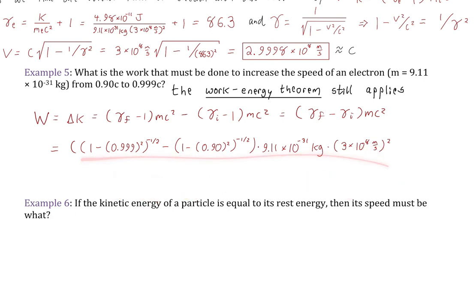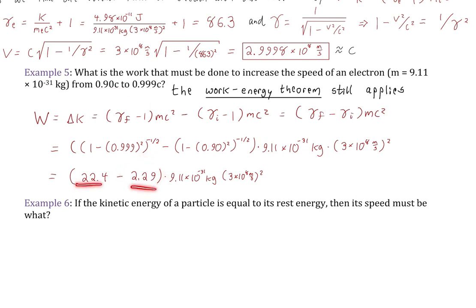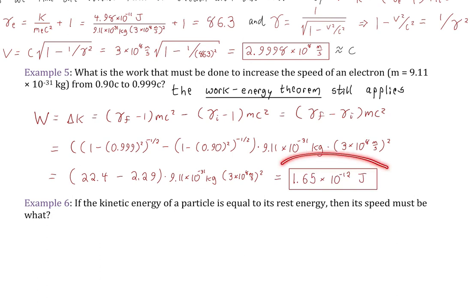The Lorentz factor for 0.999C — 99.9% of the speed of light — is 22.4, while the Lorentz factor for 0.9C is 2.29. It's obviously not linear; the values shoot up to infinity. Multiplying the difference in Lorentz factors by the mass of the electron times the speed of light squared, we get 1.65 times 10 to the negative 12 joules. That doesn't seem like much, but this is for an individual electron — it's actually a lot of energy to impart to a single electron.